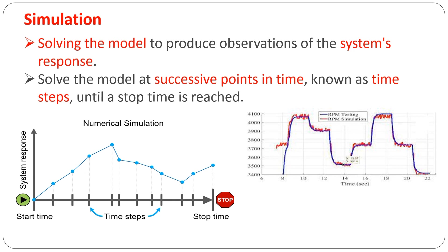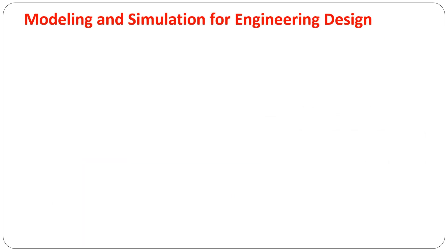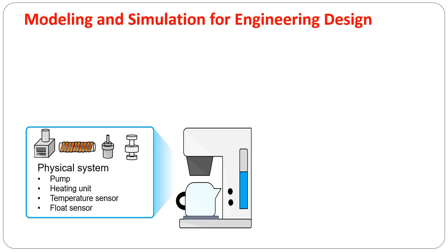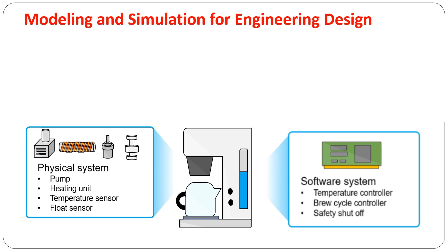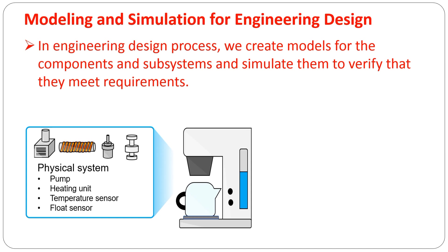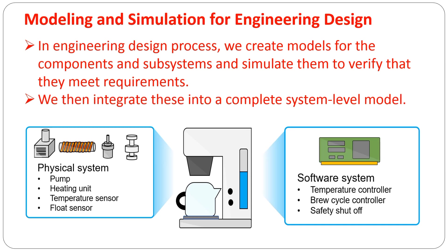Modeling and Simulation for Engineering Design: consider a few systems we might encounter daily, like refrigerators, cars, elevators, and coffee makers. These often include a physical system, also known as a plant, and embedded software that makes it function — such as controllers and state machines. We can use modeling and simulation to design both physical and software systems. In this engineering design process, we create models for the components and subsystems, simulate them to verify that they meet requirements, and then integrate these into a complete system-level model.